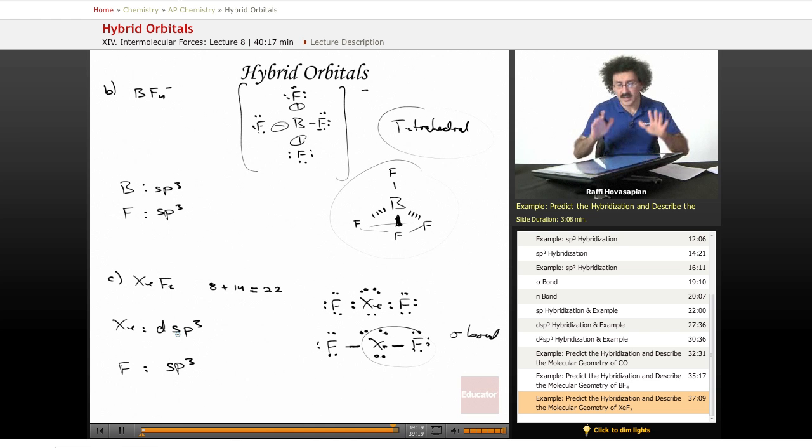So that's it. It's just a question of how many objects you have around a central atom. The number of objects will actually tell you what kind of hybridization you have.